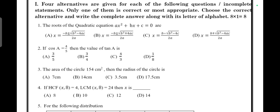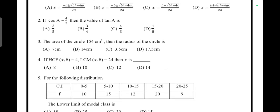If cos A = 4/5, then the value of tan A is answer B, 3/4. The area of a circle is 154 cm², then radius of the circle is answer A, 7 cm.